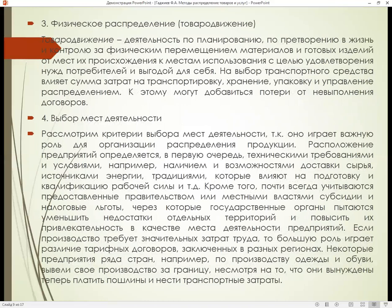Физическое распределение, то есть товаропродвижение. Товаропродвижение – деятельность по планированию, претворению в жизнь и контролю за физическими перемещениями материалов и готовых изделий от мест их производства к местам использования с целью удовлетворения нужд потребителей и коммерческой выгоды для фирмы.